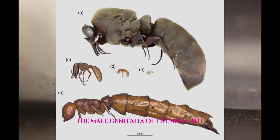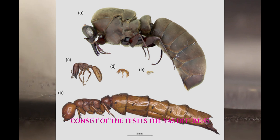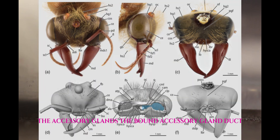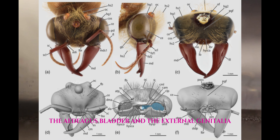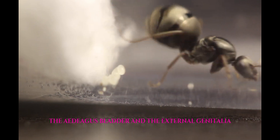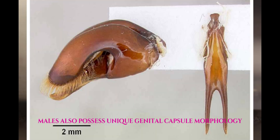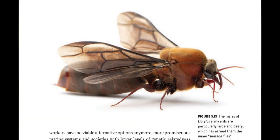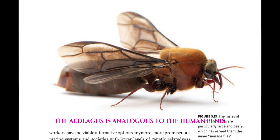The male genitalia of the army ant, specifically the African driver ant, consists of the testes, the vasa efferentia, the vasa deferentia, the seminal vesicles, the accessory glands, the bound accessory gland duct, the ejaculatory duct, the aedeagal bladder, and the external genitalia. Dorylus males also possess unique genital capsule morphology, where a tiny diamond-shaped structure is formed from a fragment of the basomeres and is visibly dorsal over the aedeagus. The aedeagus is analogous to the human penis and is where insects secrete sperm.